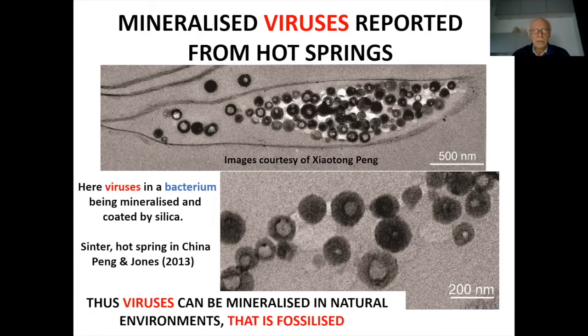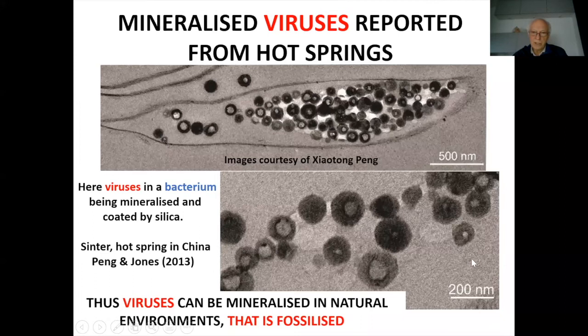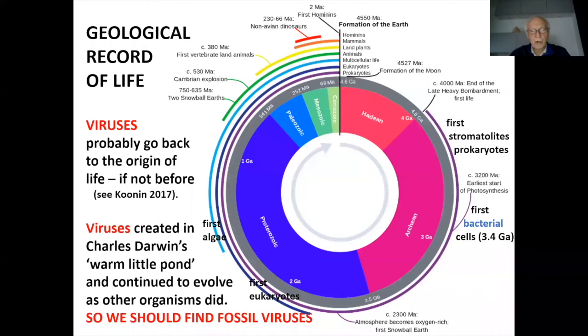Mineralized viruses have been described before. There's one paper by Peng and Jones from 2013 describing them from a hot spring in China, where they've been silicified. You can see them very clearly inside the bacterium — these are the viruses — all about the same size, and if you look carefully, they are not exactly nanospheres. These ones have been coated as well, so they're slightly bigger than they were originally.